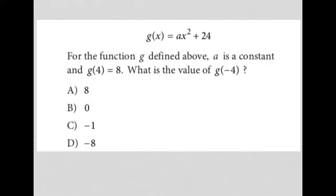This question says g(x) equals ax squared plus 24. For the function g defined above, a is a constant, and g(4) equals 8. What is the value of g(-4)?